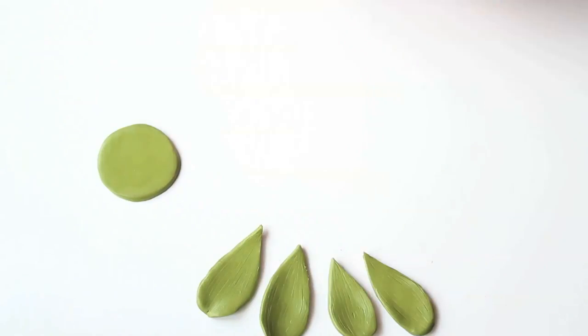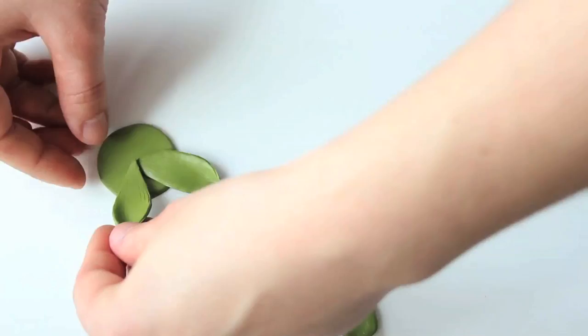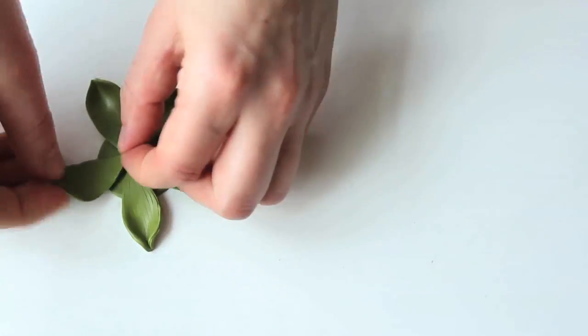This is how it should look. When all five leaves are done, place them on the round base symmetrically to form a five leaf composition. Curve the outer edges of the leaves to make them more three dimensional.